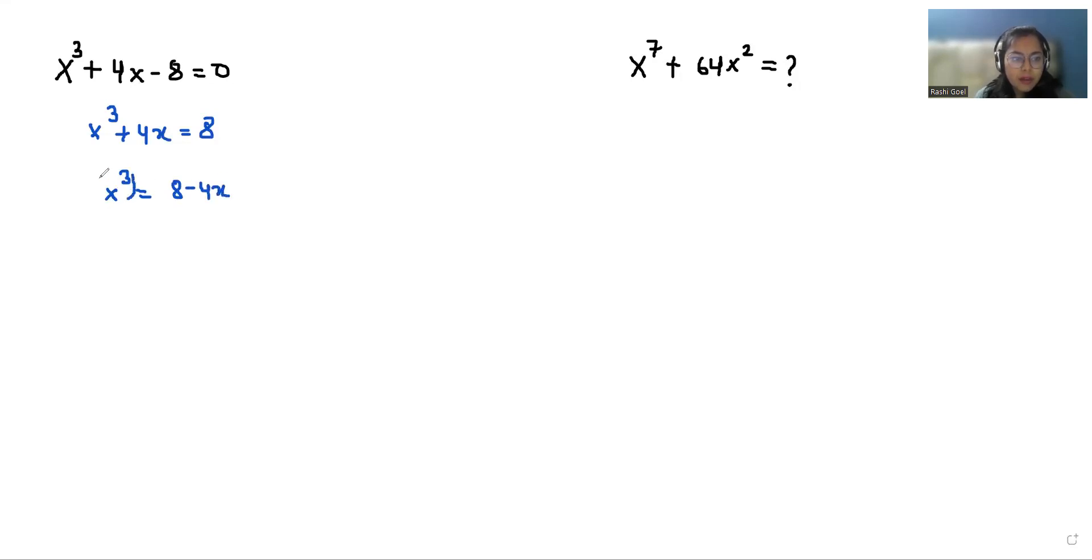Now I am squaring both sides. Using the rule of exponents (xᵐ)ⁿ = xᵐⁿ, we can write this as x⁶.